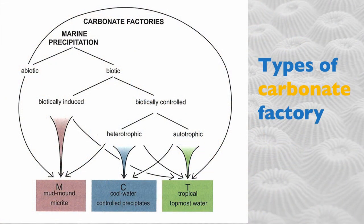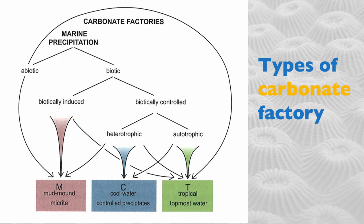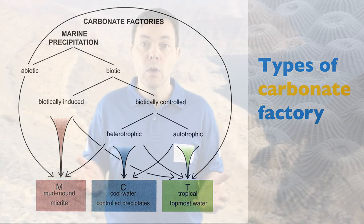Then we have a factory dominated in volume by autotrophic organisms — things like corals — that produce a lot of calcium carbonates but need light to grow. This is known as the T factory: T for tropical, because it tends to grow in warmer waters, but also T for topmost water.